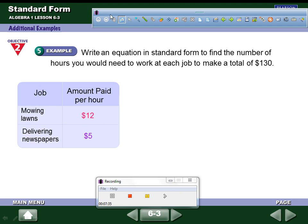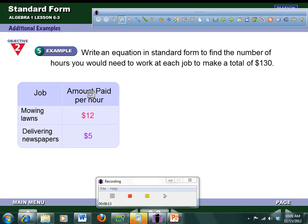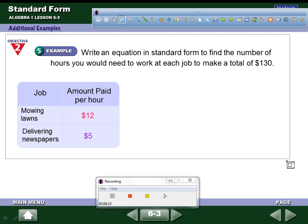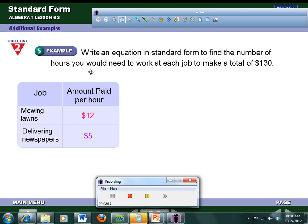Write an equation in standard form to find the number of hours you would need to work at each job. A total of 130 hours. So for mowing lawns, you make $12 an hour. How much do you charge, buddy? $12 an hour? You charge by the yard, right? Are you still mowing lawns? No. Now you can shovel driveways, right? Do you do that in the wintertime? No. So let's grab a picture of this.